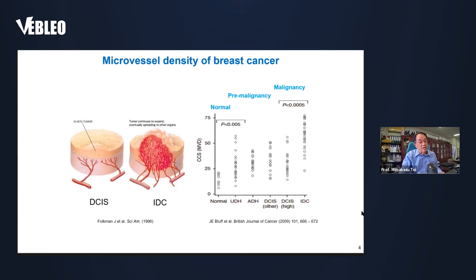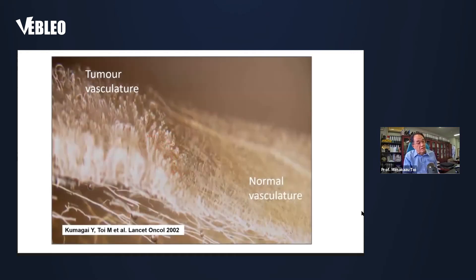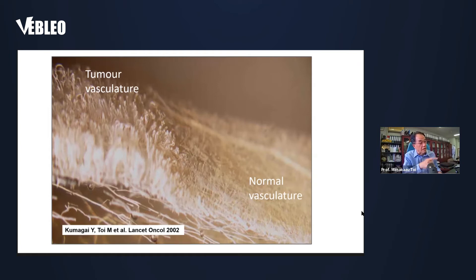Largely to say, angiogenesis is important for tumor progression. This is another typical view of esophageal cancer — fixed esophageal tissue materials. On the right-hand side we are looking at the normal vasculature of normal epithelium of the esophageal. On the left-hand side is the tumor, looking at the tumor vasculatures. The tumor vasculature looks irregular, elongated, dilated, more dense — a lot of different phenotypes compared with normal vasculature. This was published by Kumagawa and myself in 2002.